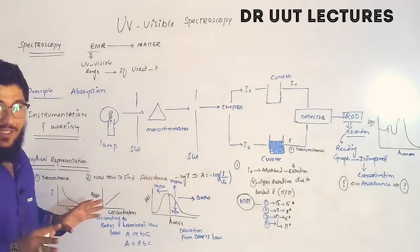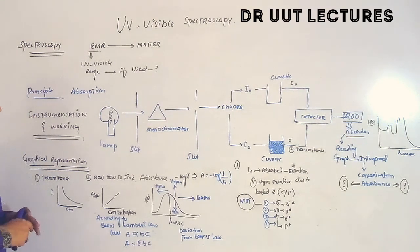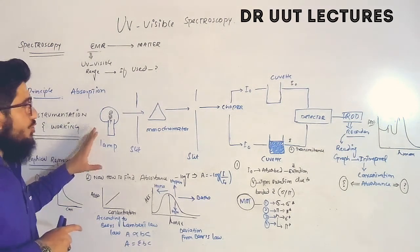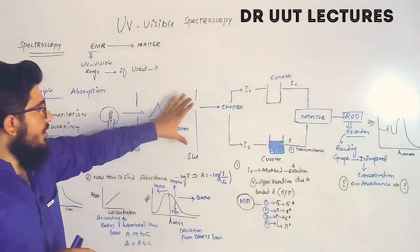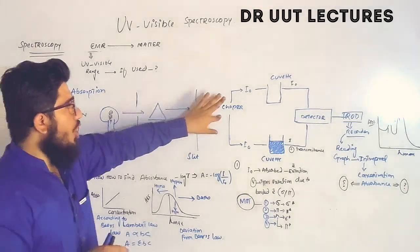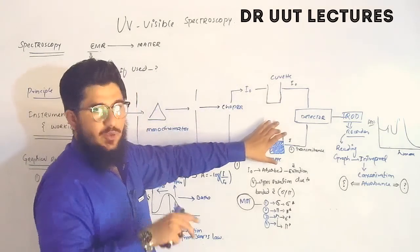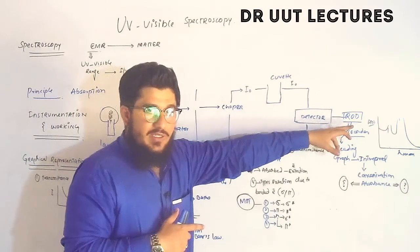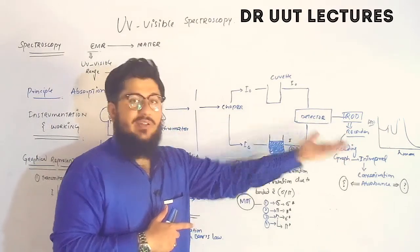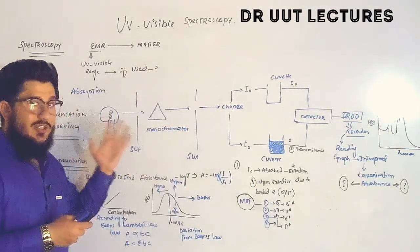The next point is instrumentation, followed by working. In the instrument we have: lamp, slit one, monochromator, slit two, chopper, cuvette one, cuvette two, detector, and a readout device — and then we get the result.